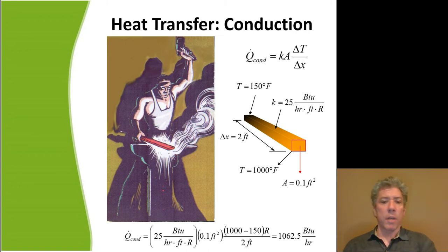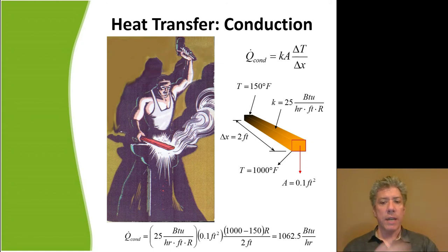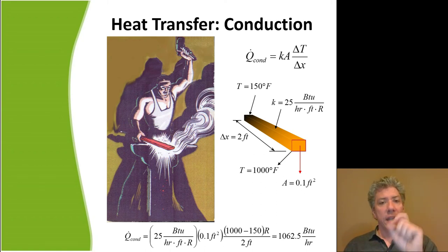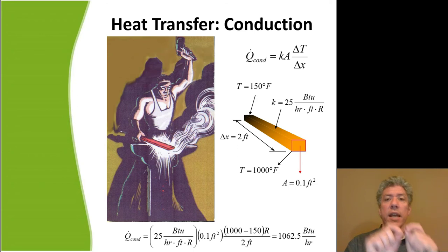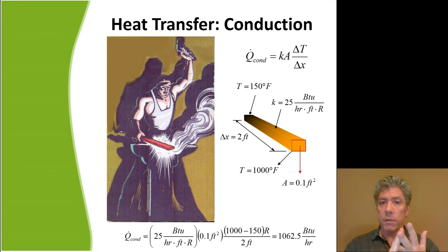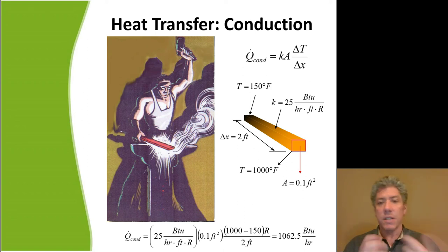Plugging in all the numbers: thermal conductivity 25 BTUs per hour per foot per Rankine, cross-sectional area a tenth of a square foot, temperature difference 1,000 minus 150 — the difference can be Rankine or degrees Fahrenheit, it won't matter because it is a temperature difference. One important note about thermal conductivity: the temperature unit in the denominator is a temperature difference, not an absolute temperature and not a relative temperature. So 1,000 minus 150 degrees Fahrenheit is the same as 1,000 minus 150 Rankine. Then we divide by delta X, the length, which is 2 feet.